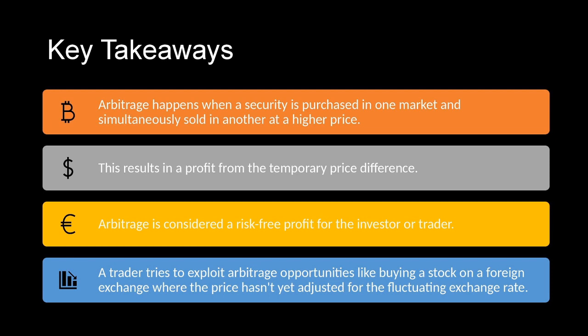The key takeaways: First, arbitrage happens when a security has a lower price in one market and a higher price in another. Second, it is just a temporary price difference, not a permanent one. Third, arbitrage is considered a risk-free profit for the investor. Fourth, a trader tries to exploit arbitrage opportunities, like buying a stock on a foreign exchange where the price hasn't yet been adjusted for the fluctuating exchange rate. Hereby we completed the topic of arbitrage.